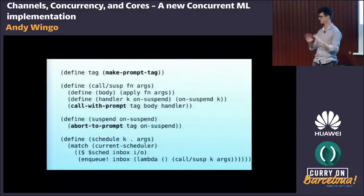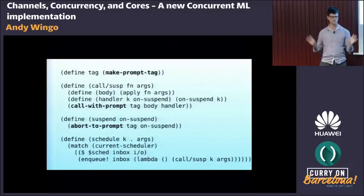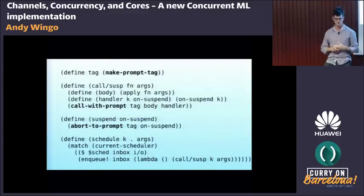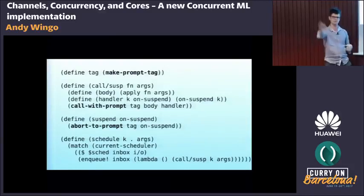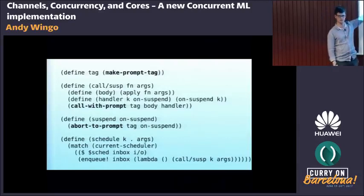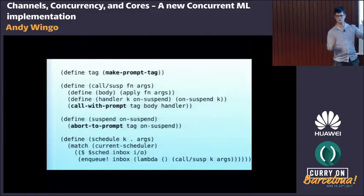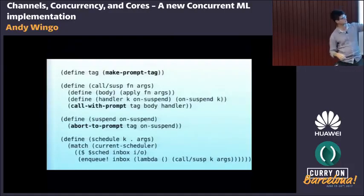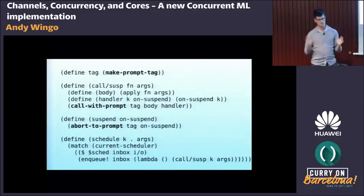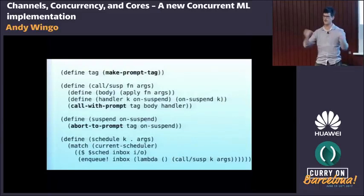`make-prompt-tag` makes a fresh object. `call-with-prompt` establishes a prompt in the operating system sense: it runs a body thunk, and if there's ever an abort to that prompt anywhere within that body — even deeply recursed — you come back to that return point on the stack and pass any aborted values to the handler. The handler's first argument is the suspended continuation (which you can resume), plus any other arguments passed to abort.